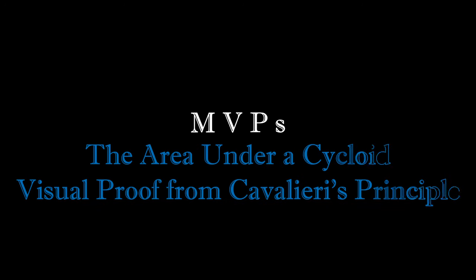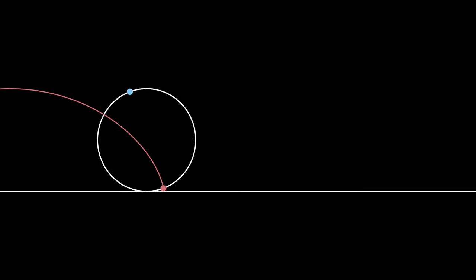Let's learn a fascinating fact about an amazing curve. Imagine a circle lying on a flat line. Let's label one point on the circle that's tangent to the line, and let's start rolling this circle over and over again.